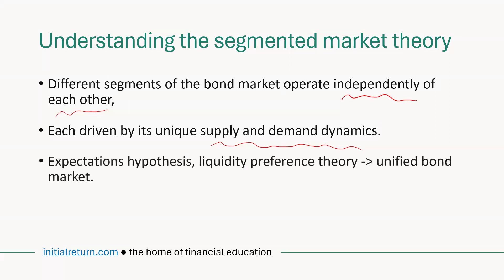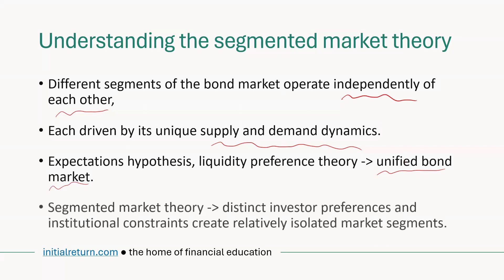You might ask how this theory differs from the previous ones we have talked about. Both of the two previous theories relied on essentially a unified bond market, not a segmented one. In contrast, as the name implies, segmented market theory says that there are market segments in the overall bond market, driven by distinct investor preferences and institutional constraints leading to isolated market segments.